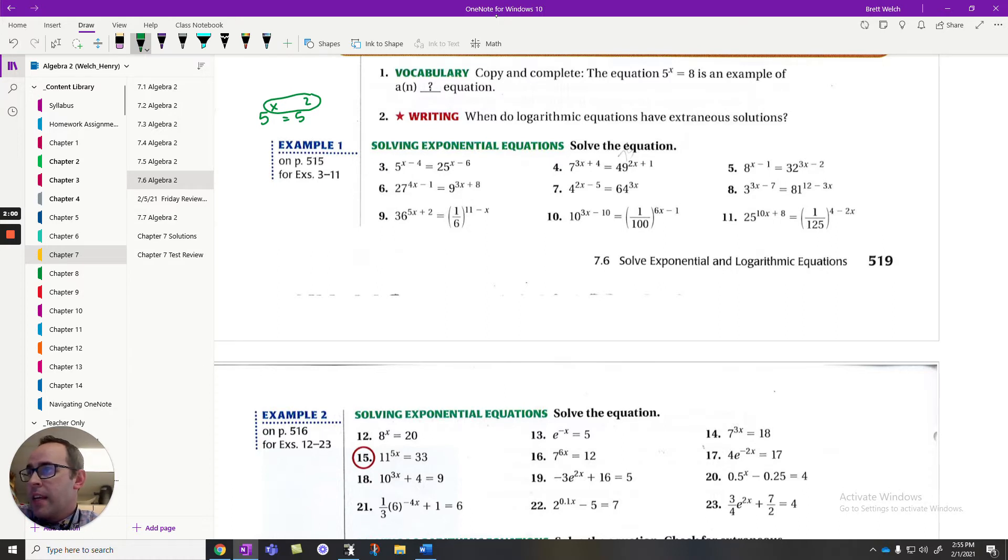So on number 3, if I can get this 25 to be 5 to a power, then the problem becomes solvable. 5 to the x minus 4 equals, instead of writing 25, I want to write 5 squared. Now the catch is it comes with distribution for any exponent that was already there. Since I already had an x minus 6, that 2 is going to have to distribute through there. But the real beauty here is that now, because the 5s match, I can apply a log base 5 to both sides.